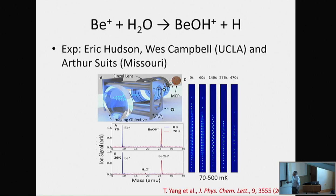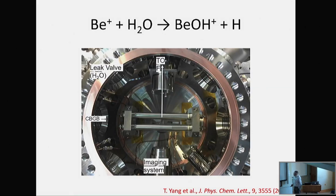Now let's move to other systems. This work is in collaboration with Eric Hudson and Wes Campbell — I believe Wes was a graduate student from John Doyle's group at Harvard. Essentially what they were able to do is build a very low temperature cooling crystal of these ions. They leak hydrogen in, and water molecules basically eat off all these ions. Eventually they can see fewer and fewer ions. They can analyze the product using mass spec to know the rate. The cooling was done by optical pumping between the ground and excited states.